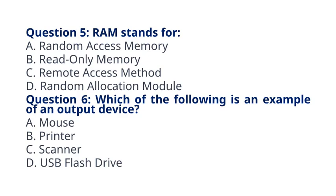Question 6: Which of the following is an example of an output device? A. Mouse, B. Printer, C. Scanner, D. USB flash drive. The correct answer to question 6 is option B: Printer. Explanation: A printer is an output device that produces a hard copy of documents or images.